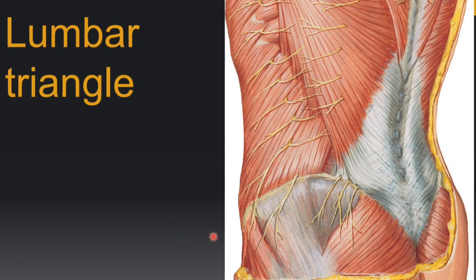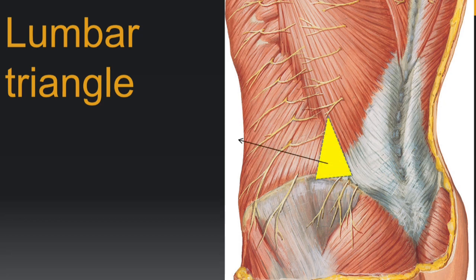Coming to the lumbar triangle: it is formed between the lower fibers of latissimus dorsi posteriorly and the external oblique abdominis muscle anteriorly, with the base formed by the iliac crest. The apex is formed by the junction of the latissimus dorsi fibers and the external oblique abdominis muscle. This is called the lumbar triangle. It does not have major clinical importance, but another important triangle is the triangle of auscultation.